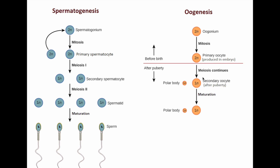After birth and after reaching puberty, the primary oocyte — which is already residing there — is going to convert through a continuous process of meiosis into the secondary oocyte. This is similar to the secondary spermatocyte in spermatogenesis. So after puberty, meiosis begins in the primary oocyte.